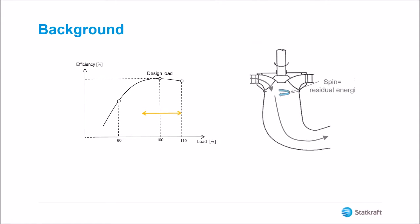However, as the load shifts away from the best efficiency point, more residual energy will be left in the water. This residual energy will result in a spin of the water in the draft tube.